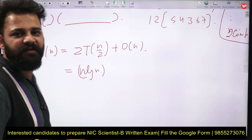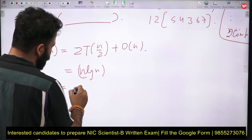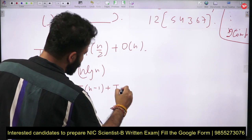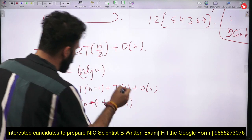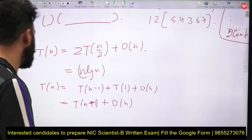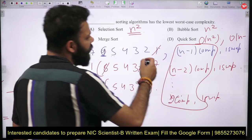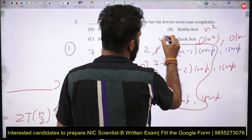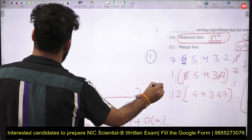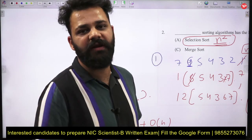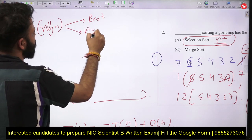In quick sort's worst case, the pivot divides the array such that one part has one element and the rest are in the other part. The recurrence becomes T(n) = T(n-1) + T(1) + O(n), which simplifies to T(n) = T(n-1) + O(n), giving worst-case complexity of O(n²). So quick sort's worst case is O(n²), same as selection sort and bubble sort.